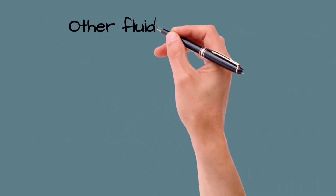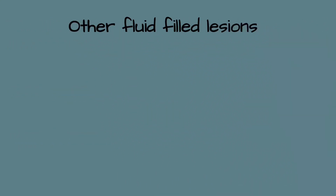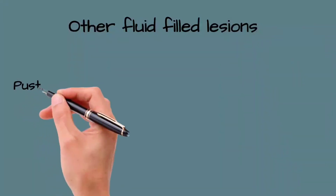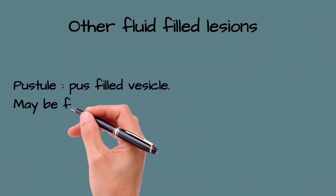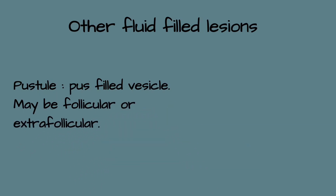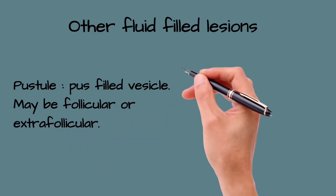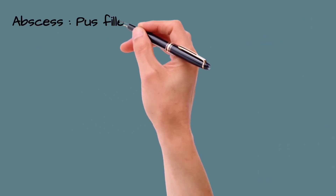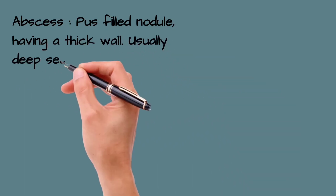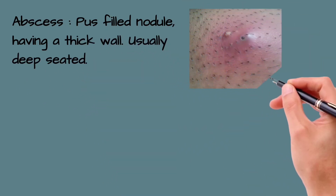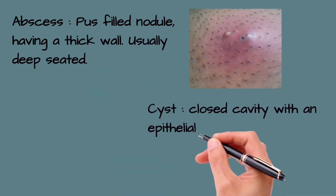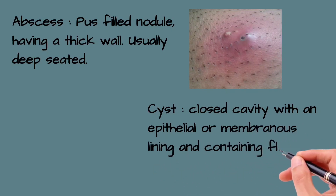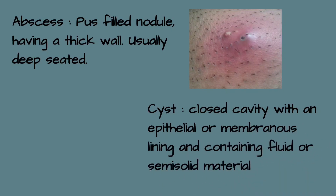Other fluid-filled lesions are pustule, abscess, and cyst. A pustule is a pus-filled vesicle and may be follicular or extra-follicular. Abscesses are pus-filled nodules with a thick wall and are usually deep-seated. A cyst is a closed cavity with an epithelial or membranous lining filled with fluid or semi-solid material.